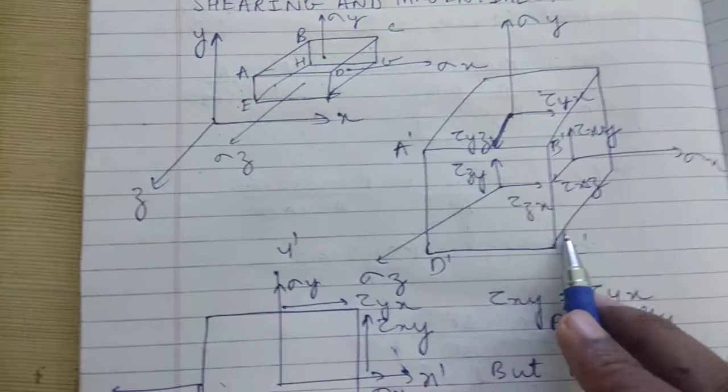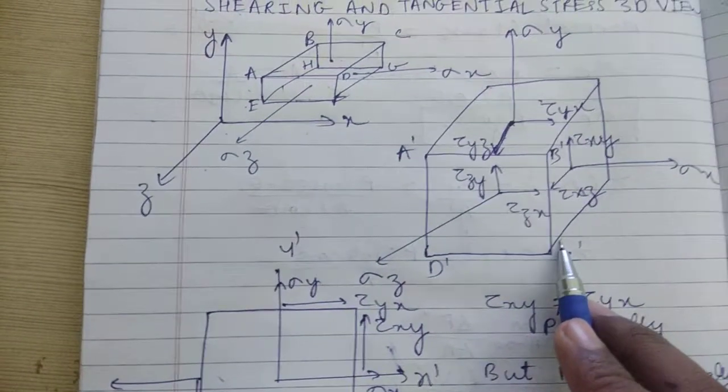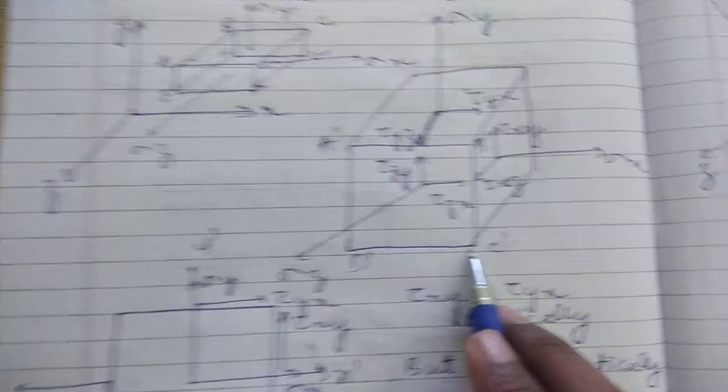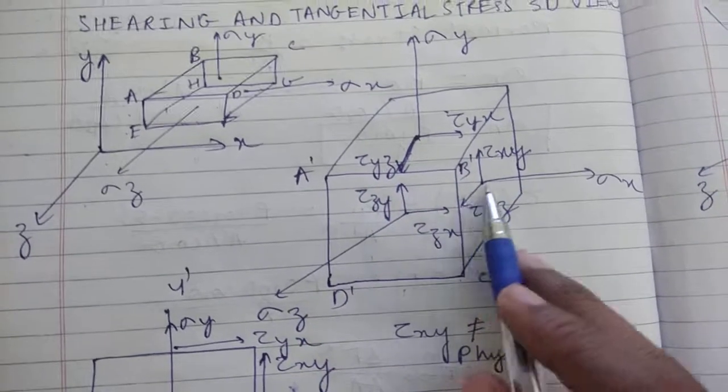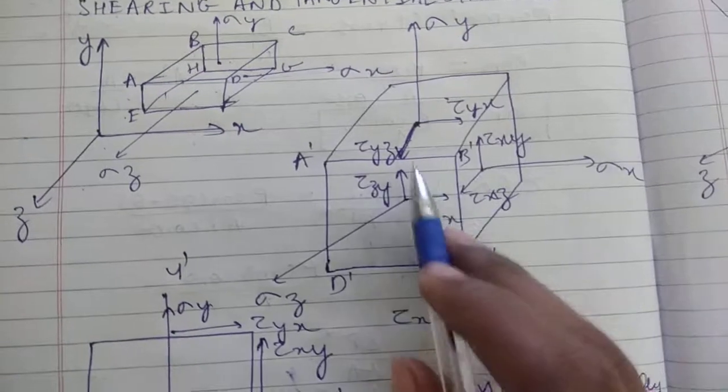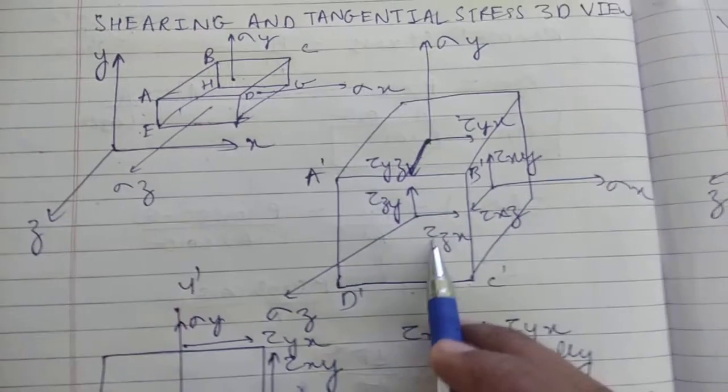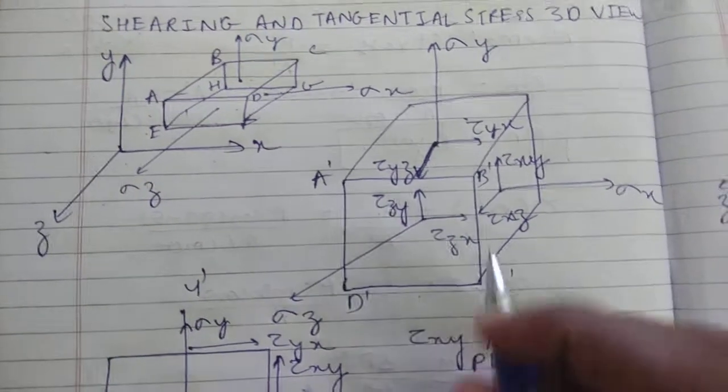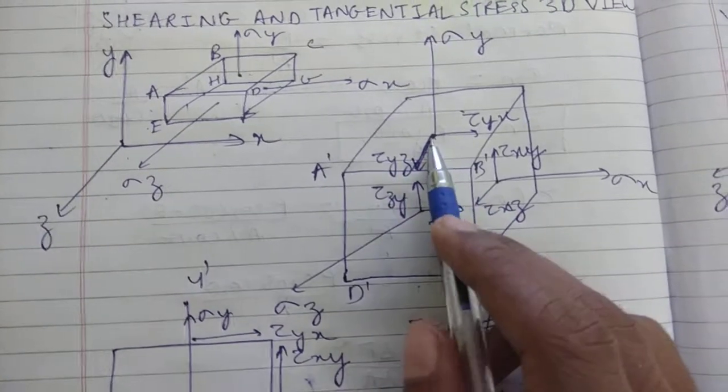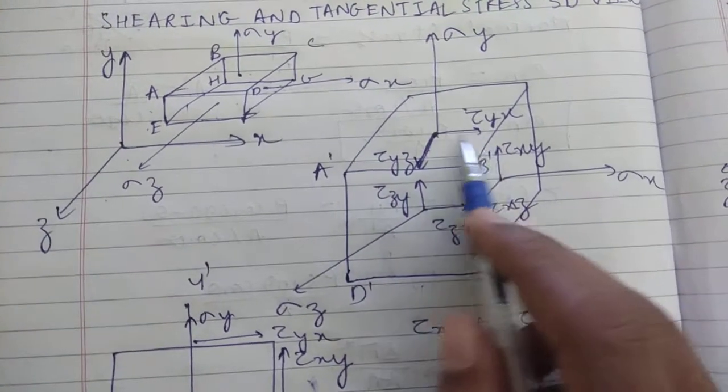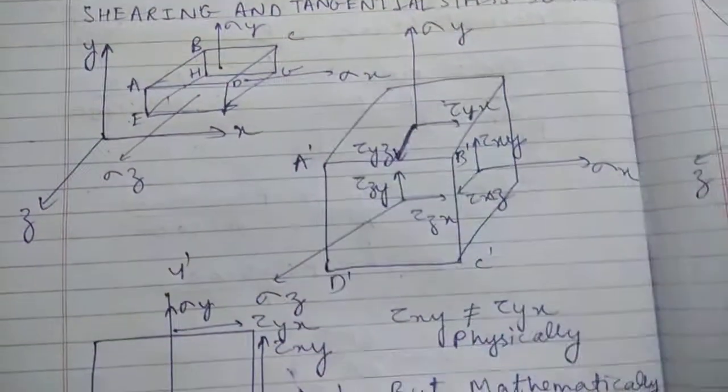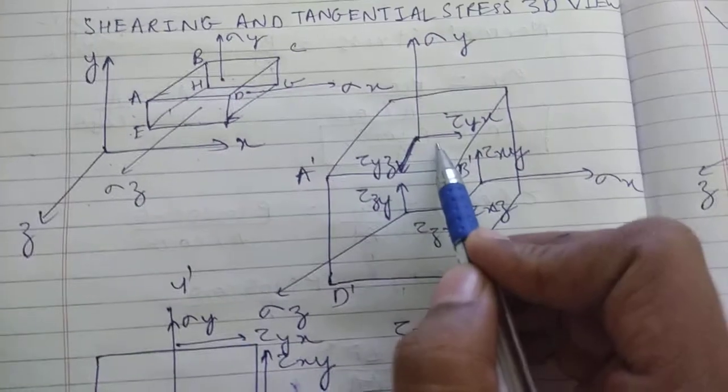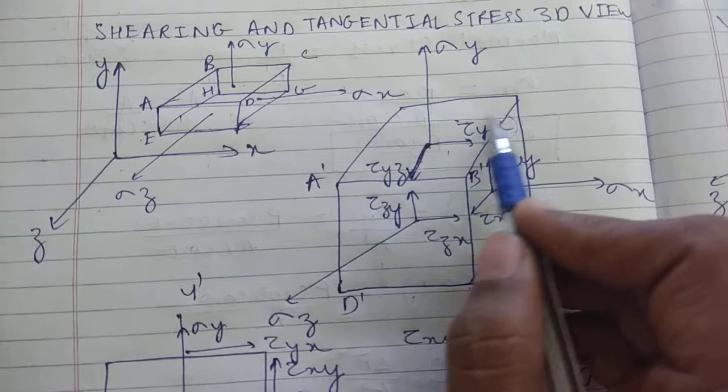Let us consider a bigger box so we can have a clearer picture of the view. In this box we have sigma x in the x direction, sigma y in the y direction, and sigma z in the z direction. This is the shearing stress that shears the surface.